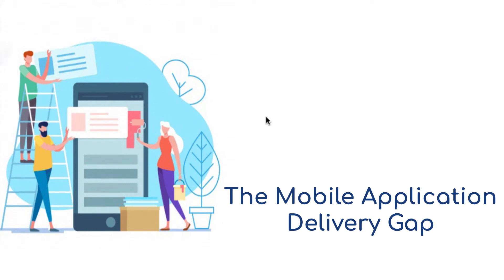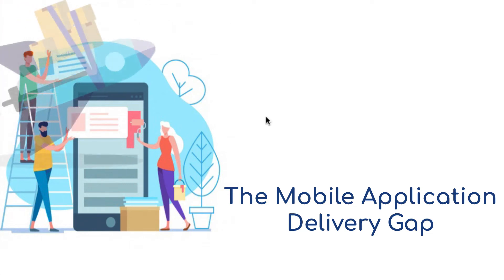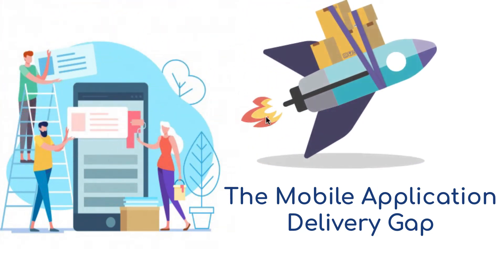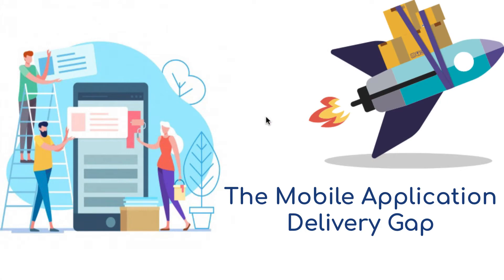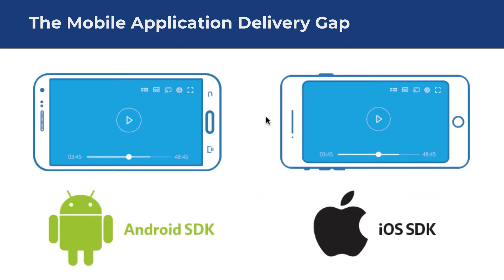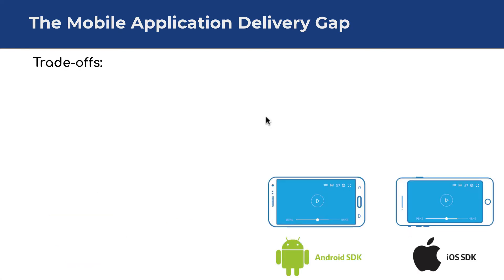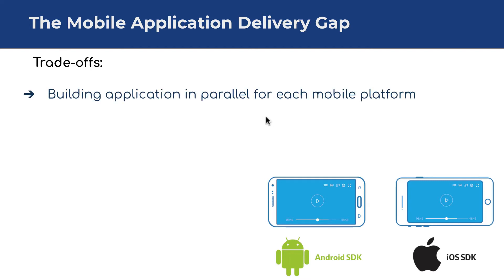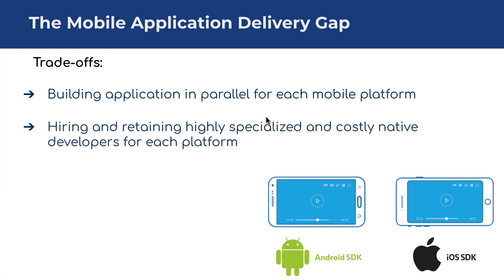Back in the early days of mobile, there was really only one way to give users the performance and features they expected: you had to use a native SDK. Of course, that comes with some trade-offs. A trade-off is a situation in which you balance two opposing situations or qualities, like building in parallel for each mobile platform, hiring and retaining highly specialized and costly native developers.